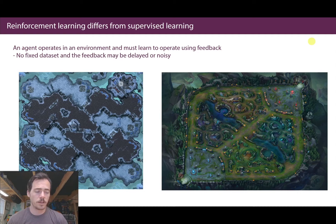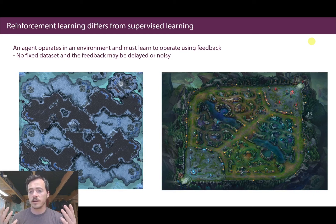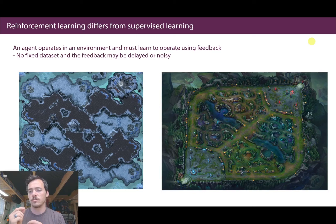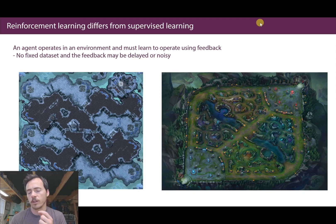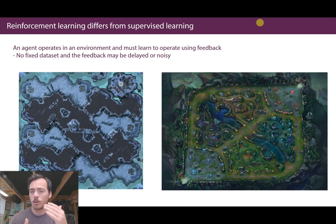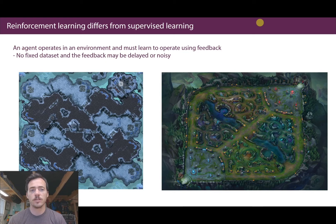Reinforcement learning differs from supervised learning even though it uses labeled data, because there is no fixed data set. Every game you play augments it based on prior decisions. The feedback might also be delayed or noisy — you don't know right away if earning gold will help you. One strategy that works one time might not work the next. Reinforcement learning is actually now being used in material science and chemistry for the design of custom molecules and materials.